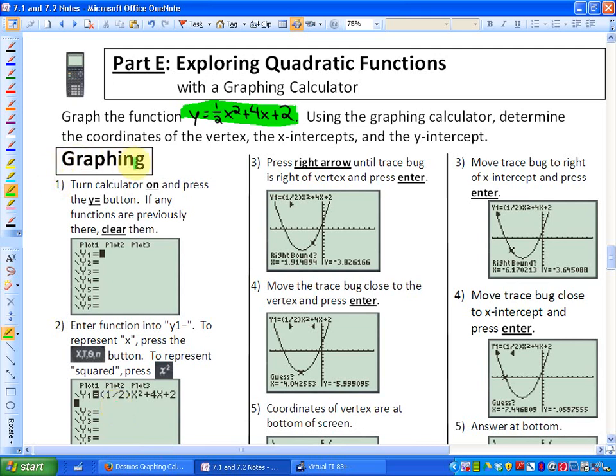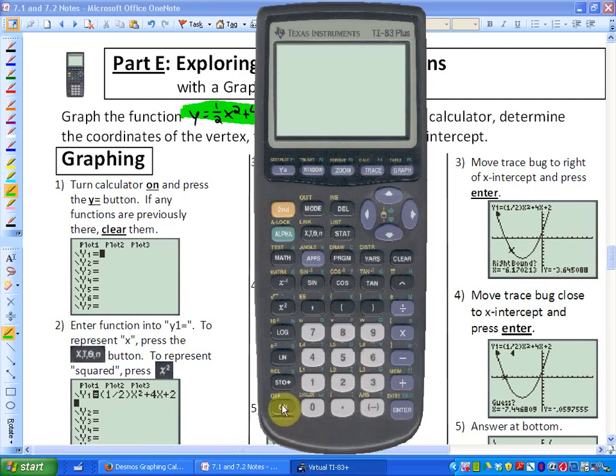So first of all, it says graphing. So step one, turn the calculator on and press the y equals button. If any functions are previously there, clear them. So here is, and if you're in my class, any of these underlined words are buttons that you're actually pressing on the calculator. So I'm turning it on. I'm pressing y equals, which is in the top row of your calculator right here, and I have no functions here.